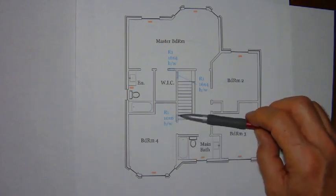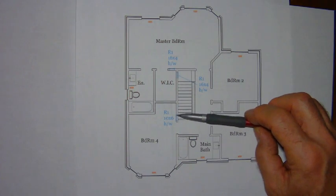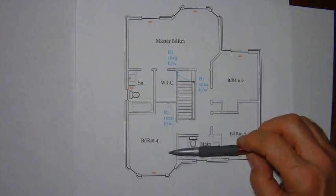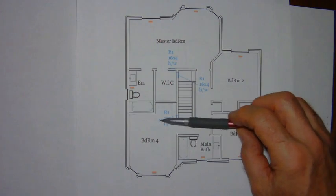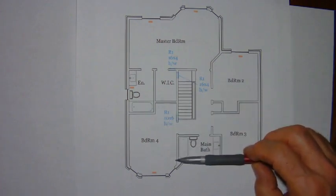The symbol for R1 is a rectangle with a line with a short dash and a longer line. This series of lines tells the installer which side of the wall the grill is on, so they know to install the grill in bedroom number four.